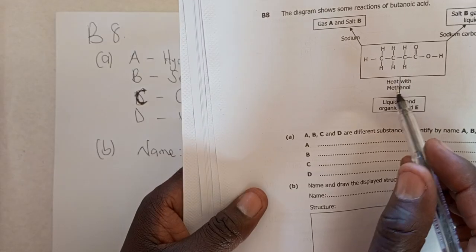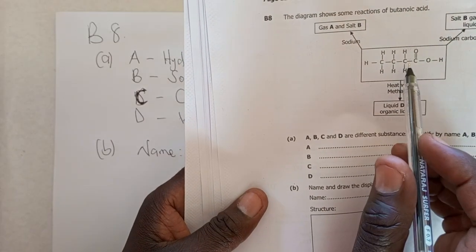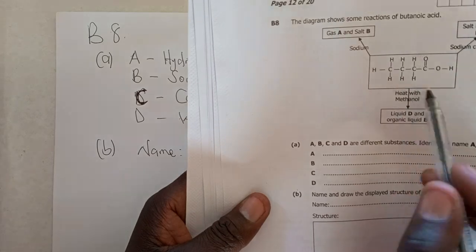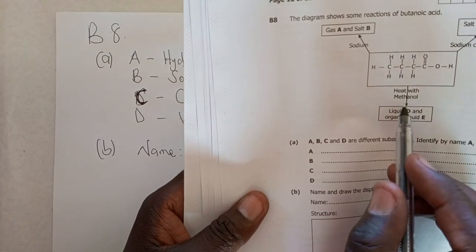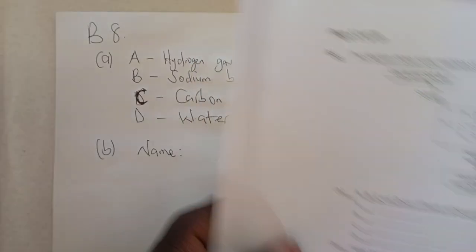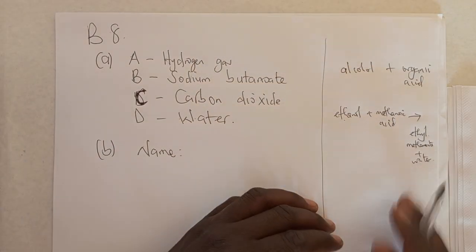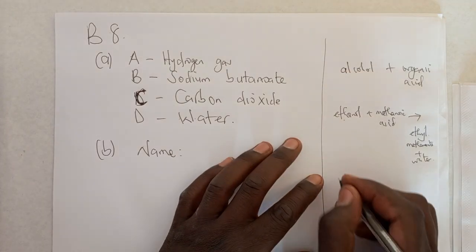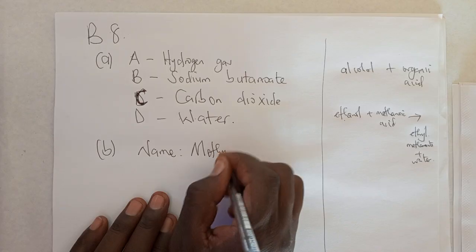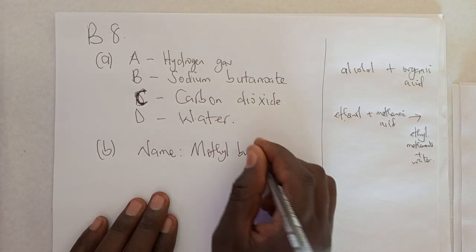The ethanol changes to ethyl, and methanoic acid changes to methanoate, plus water. In this case, we have methanol as the alcohol and butanoic acid as the organic acid. So the name is methyl butanoate. That's the name of the ester.